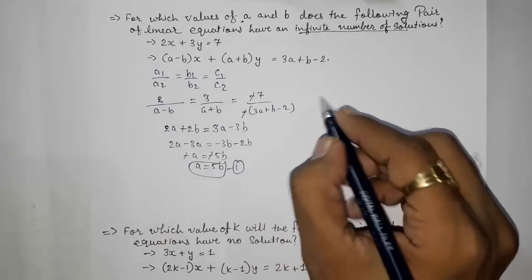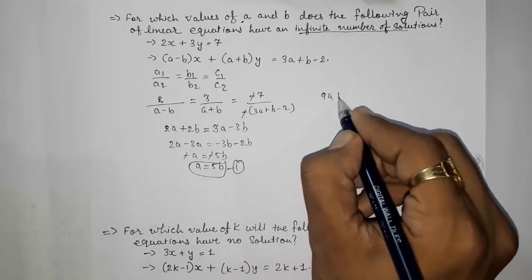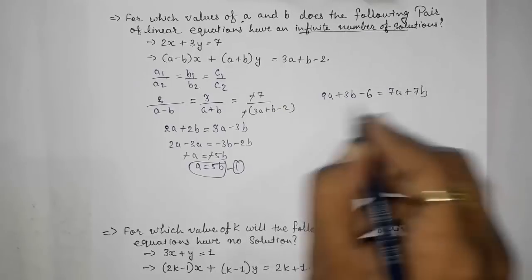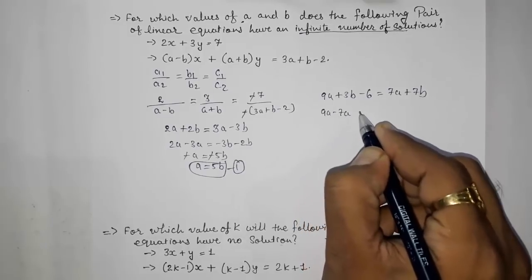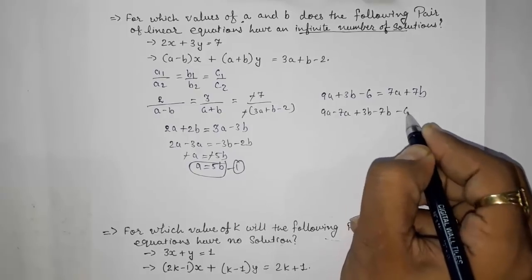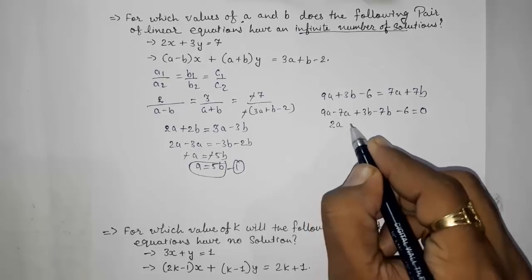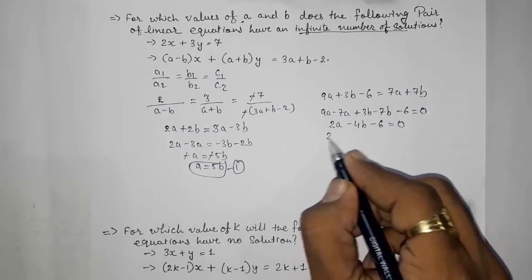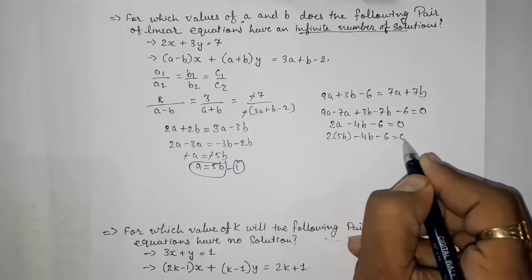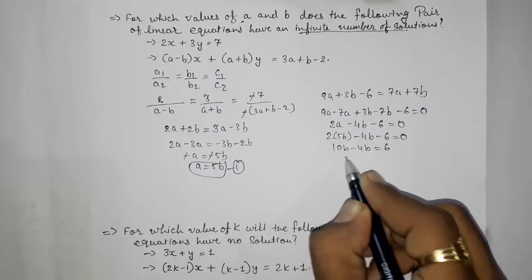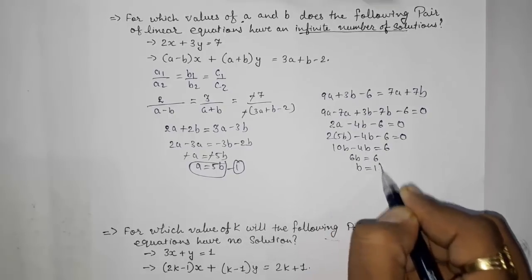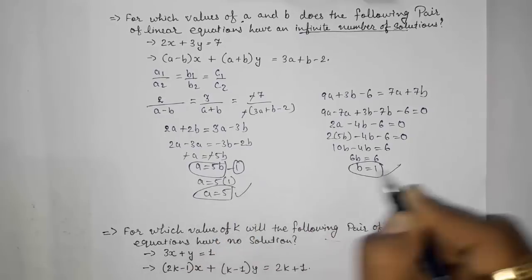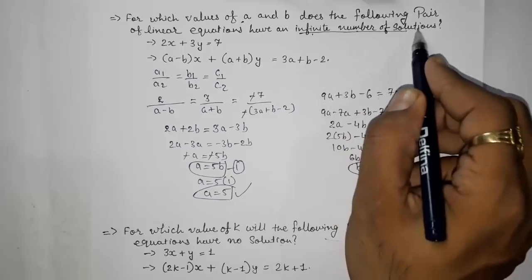From 2a + 2b = 3a - 3b, we get 2a - 3a = -3b - 2b, so -a = -5b, meaning a = 5b (result 1). Then cross multiplying the next pair: -2 × (9a + 3b) = 7 × ... rearranging gives 9a - 7a + 3b - 7b - 6 = 0, so 2a - 4b - 6 = 0. Substituting a = 5b: 10b - 4b - 6 = 0, so 6b = 6, giving b = 1, and then a = 5.